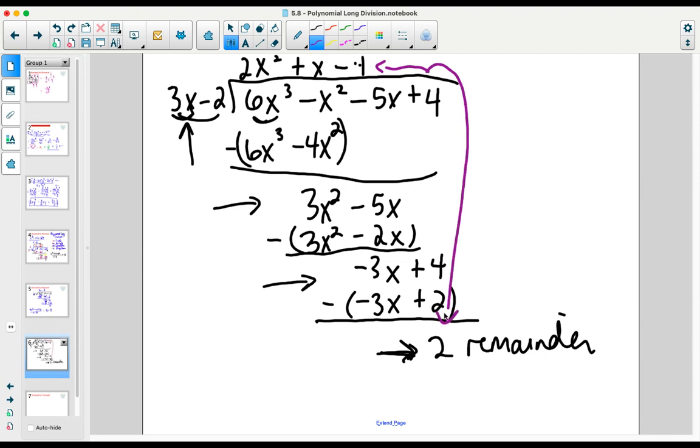When we write the solution, we need to write it as the trinomial, which is what we got from the actual division, plus the remainder over the divisor.